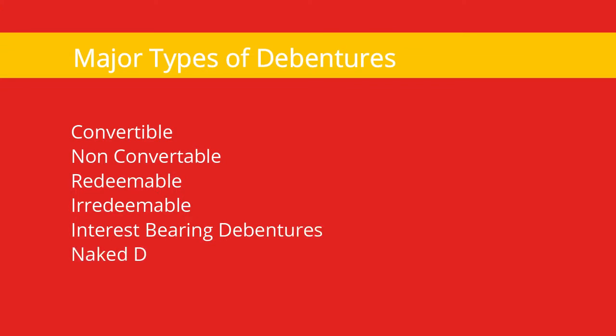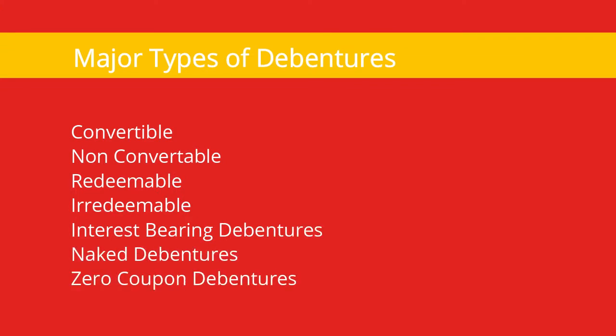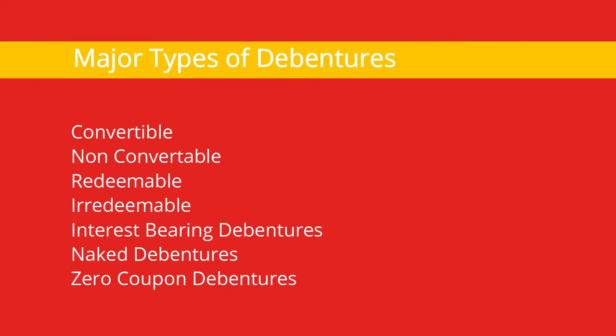Debentures can be very different types: convertible, non-convertible, redeemable, irredeemable, interest-bearing, or naked. Naked means there is no interest — in that case, it can be a zero-coupon instrument. We won't go into all the detail here because our main topic is CCD, which is Compulsorily Convertible Debentures.